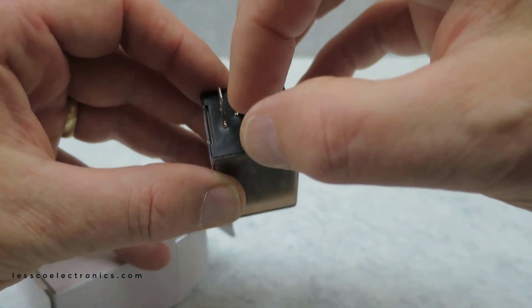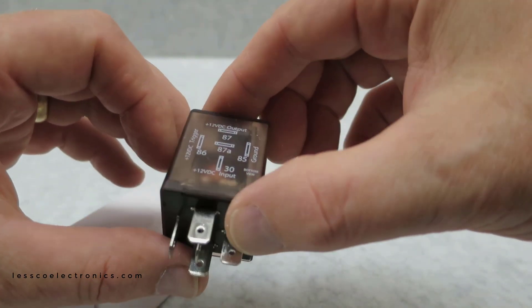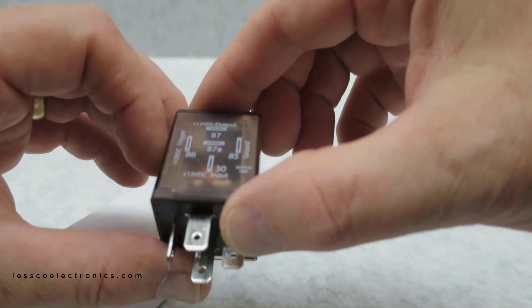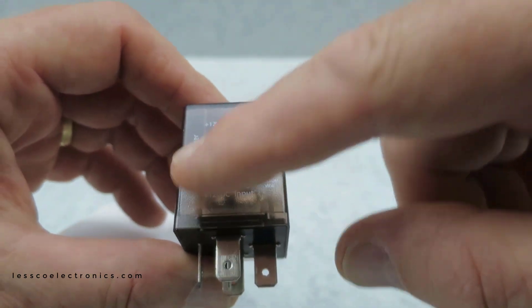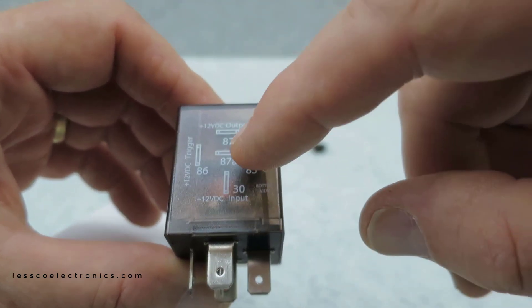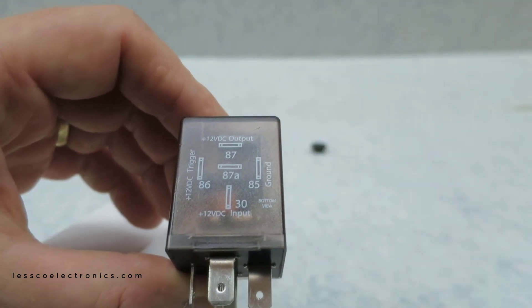This thing will do up to 30 amps of current and you can see right here it even has a schematic on it. You have the trigger, the ground input, then you have your output, so you have normally closed, normally open. Simple installation.